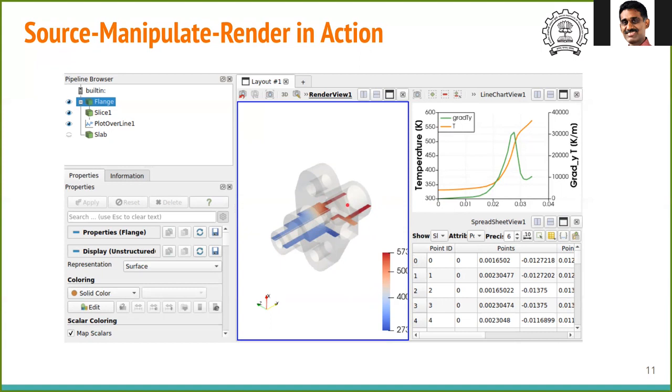The second manipulation is plot over line. In plot over line, we have defined this line on this plane and extracted the temperature and flux data. What is shown here in red on the left axis is the temperature. Temperature goes from 330 up to 573 along this line.